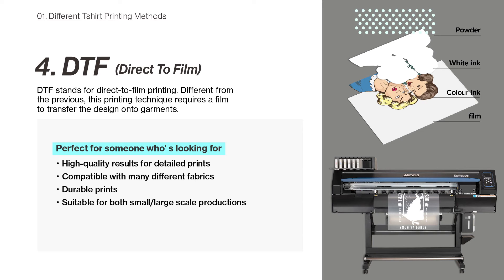Finally, DTF — direct-to-film printing — is one of the most versatile T-shirt printing methods available. Unlike the previous methods, this technique requires a film to transfer the design onto garments. It's perfect for high quality results on detailed prints: DTF produces high resolution prints with vivid colours and sharp detail, making it the best choice for intricate designs requiring colour gradients, multiple hues, or photographs.